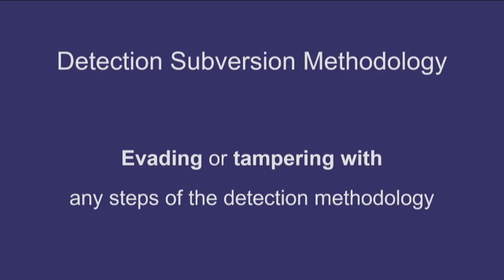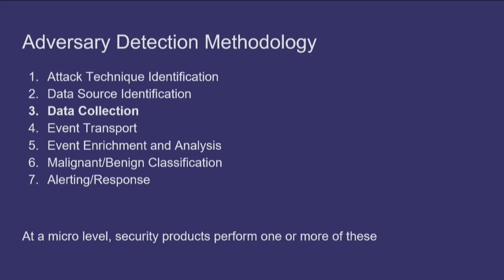Just as we have these steps for a detection methodology, those exact same steps inform our subversion methodology. The detection subversion methodology is evading or tampering with any of the steps. Instead of the first step, an attacker can select specific techniques the target organization may not be aware of. They may subvert data sources — for example, disabling a specific ETW provider. They could subvert the data collection tool by suspending or killing off the process. ETW is kind of all the rage with a lot of specific vendors.